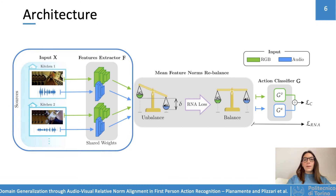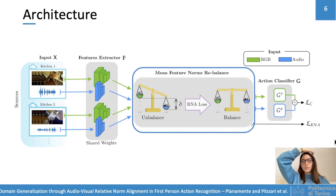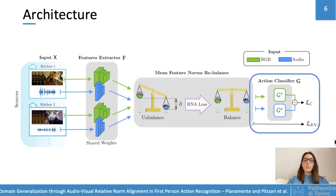Here I present our baseline. Given input from both RGB and audio modalities, we feed them to separate feature extractors, one for each modality. The RNA loss operates at the feature level by rebalancing the mean feature norms of the two modalities during training. Finally, two different classifiers, one for each modality, produce a final classification for each input. The two are combined through a late-fusion approach, and the RNA loss is minimized together with the standard cross-entropy loss.